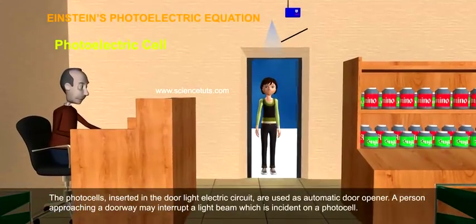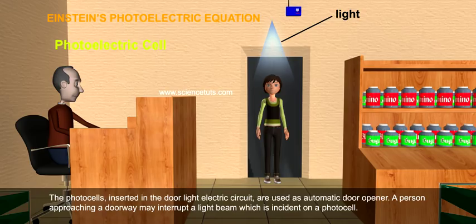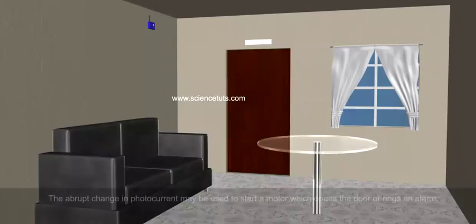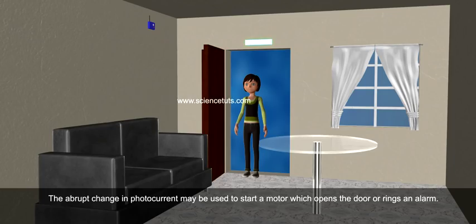Photocells inserted in the doorway electric circuit are used as automatic door openers. A person approaching a doorway may interrupt a light beam which is incident on a photocell. The abrupt change in photocurrent may be used to start a motor which opens the door or rings an alarm.